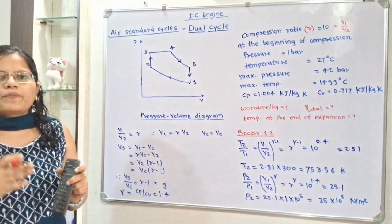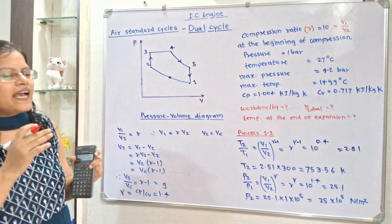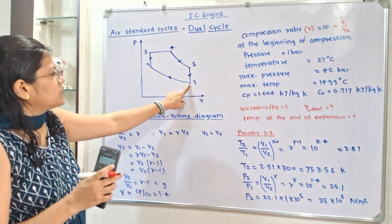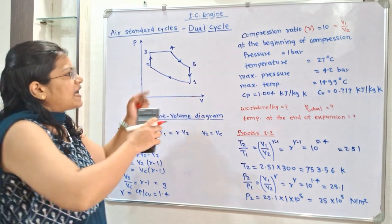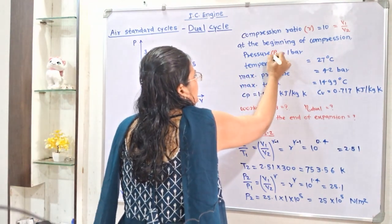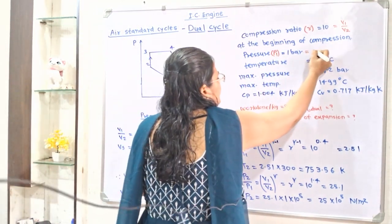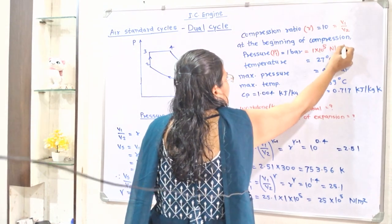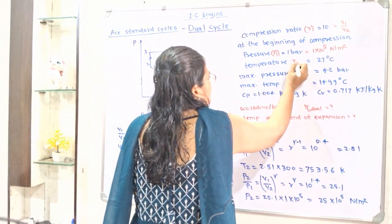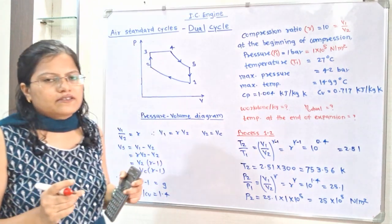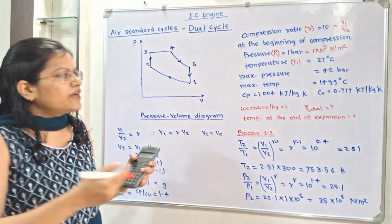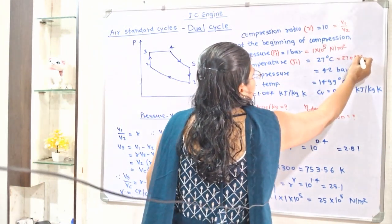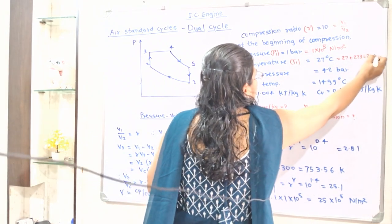At the beginning of compression, pressure and temperature are given. Process 1 to 2 is the compression process and at the beginning, that means at point 1, pressure P1 is 1 bar, which in standard units is 1 × 10⁵ N/m². Temperature T1 is given as 27°C, which we convert to Kelvin: 27 + 273 = 300 K.